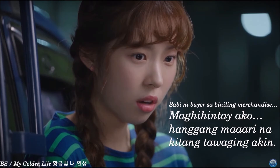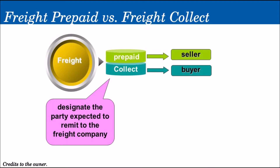I hope you understand the difference between FOB Shipping Point and FOB Destination. The next two terms are Freight Prepaid and Freight Collect. Simply put: when remitting payment to the shipping or freight company — if it's freight prepaid, the seller is the one who remitted the payment. If it's freight collect, the buyer is the one who remitted payment to the freight company. It depends on the agreement between the seller and buyer as to who actually incurs the delivery expense. Freight prepaid — seller. Freight collect — buyer. That simple.